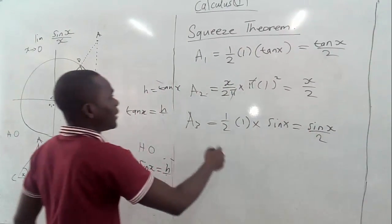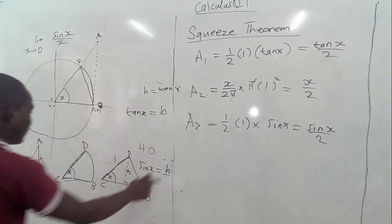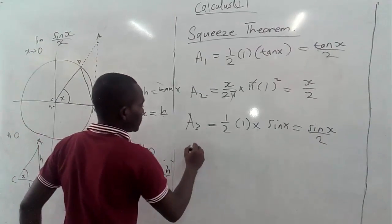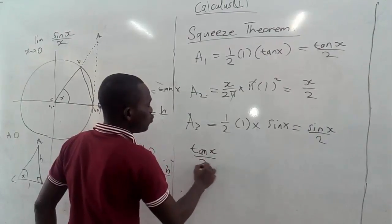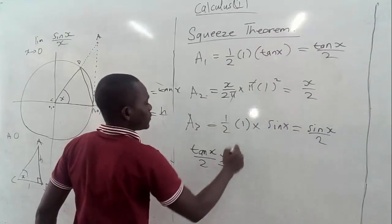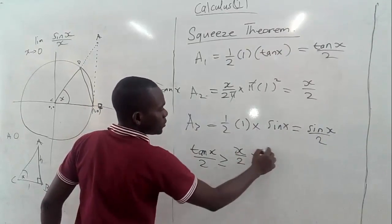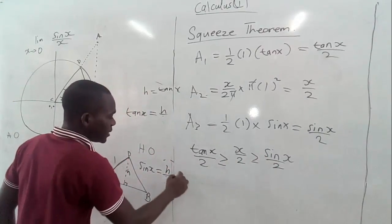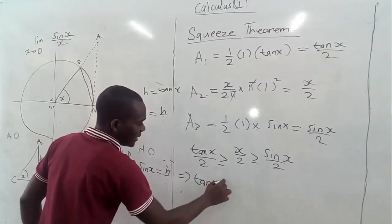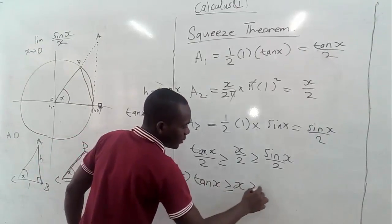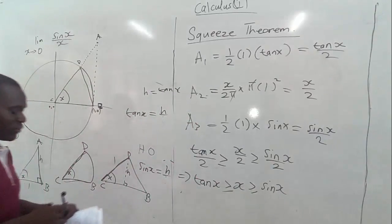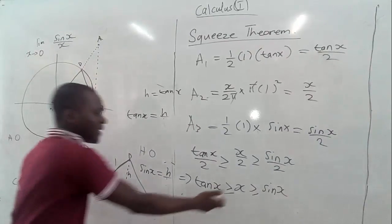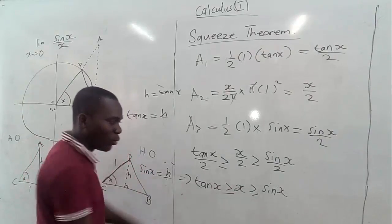Now we have three areas, and from the diagram and the unit circle we know the largest triangle is greatest, then the sector, then the smaller triangle. So we can say: tan x over 2 ≥ x over 2 ≥ sine x over 2. Multiplying through by 2, we get: tan x ≥ x ≥ sine x. We want to get an expression for sine x over x, so since we have x here, we can divide by sine x, then reciprocate.